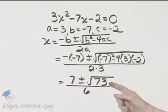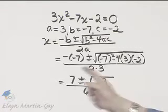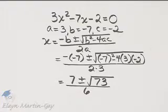Can I simplify? There are no perfect square factors in 73, so I can't simplify, and here are my two solutions to that equation.